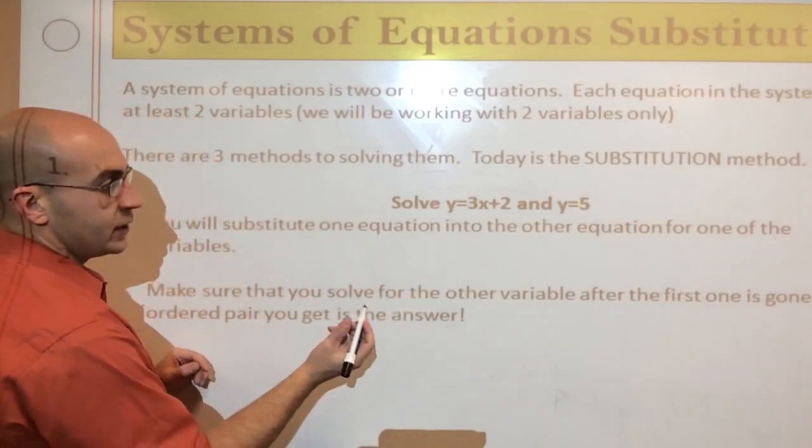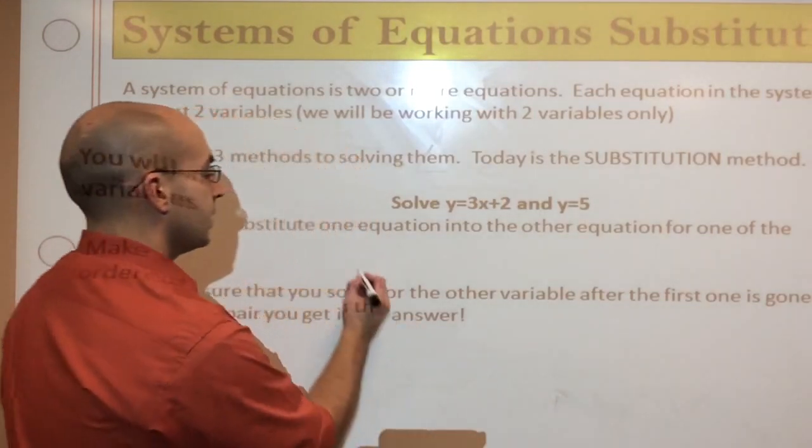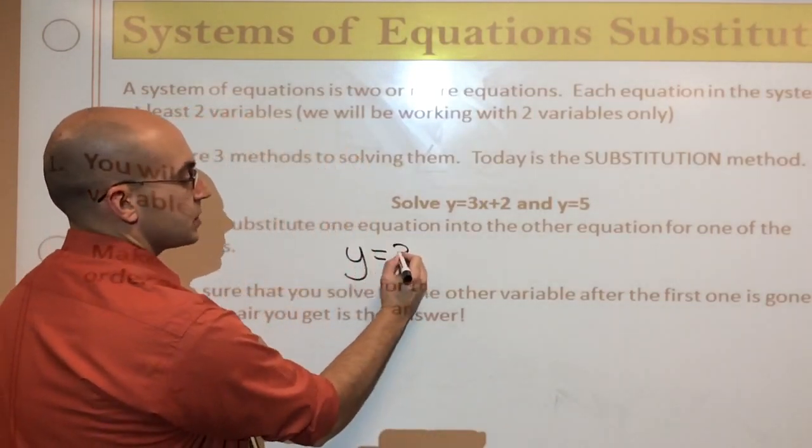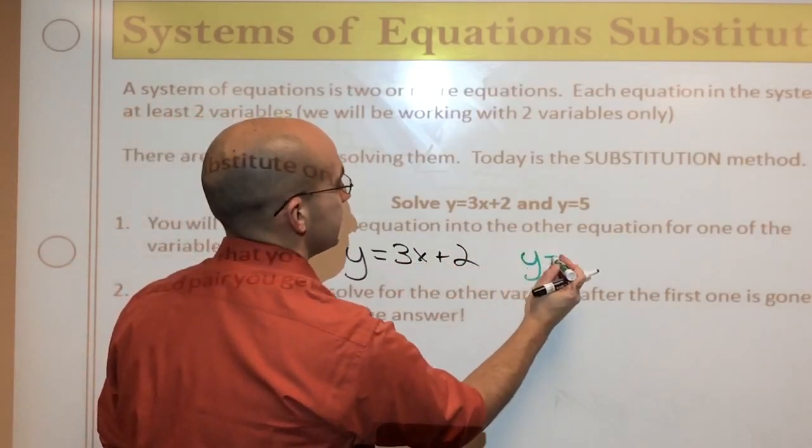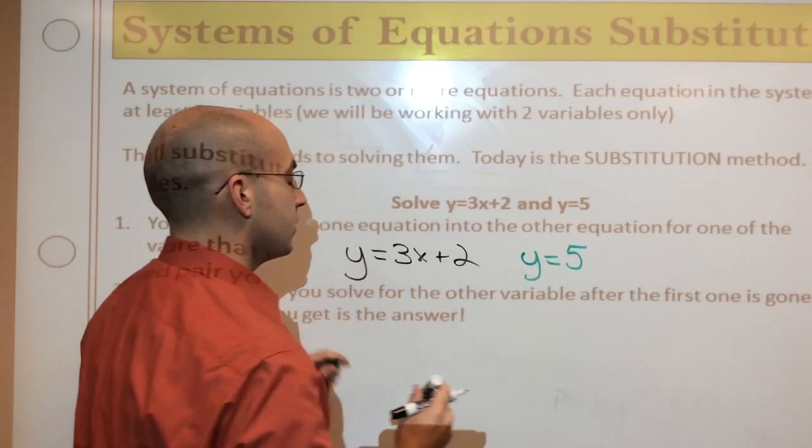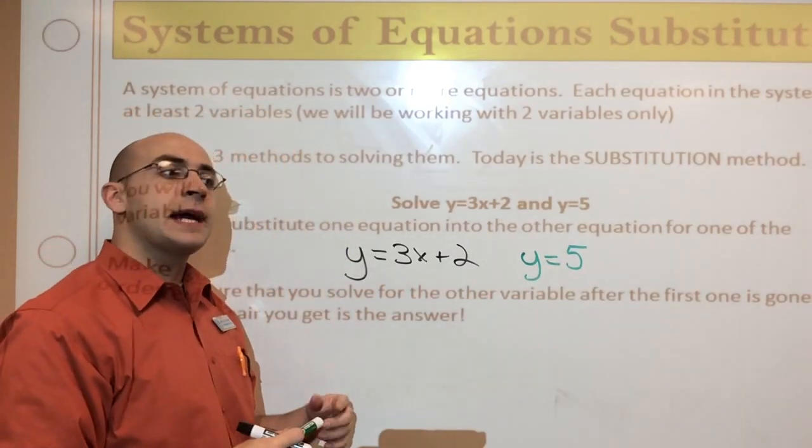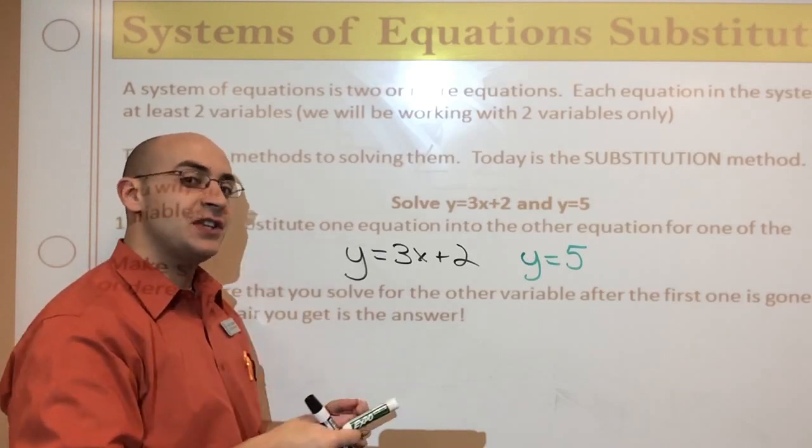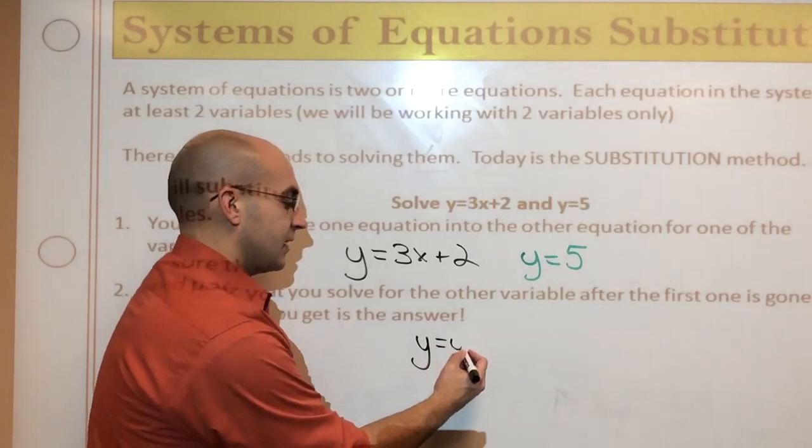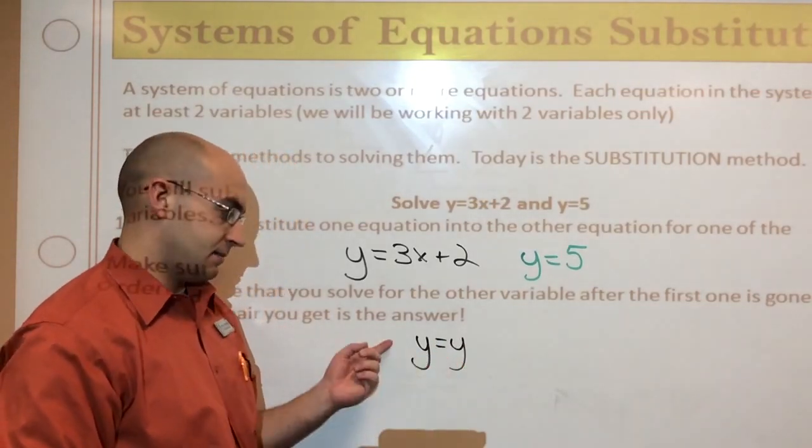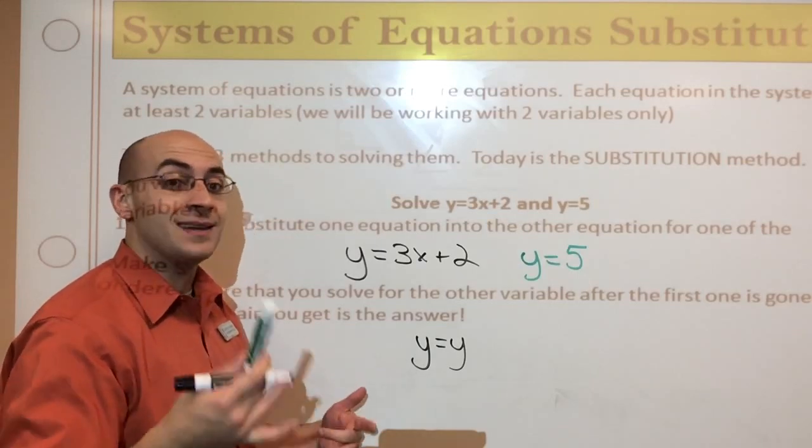So, I'm going to write this a little bit bigger over here, and I'm going to try to use two different colors to make it a little bit easier for everybody. So my first equation is y equals 3x plus 2. My second equation is y equals 5, so this is kind of an easier one, but I want to make sure we understand it. Now, they're both in slope intercept form, so what I can do is I'm going to substitute one equation into the other one. Now, before we do that, I think everybody would agree if I said y equals y because that's true.